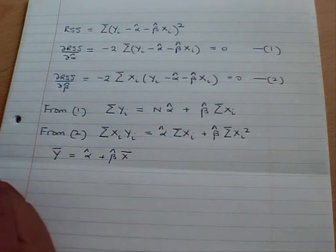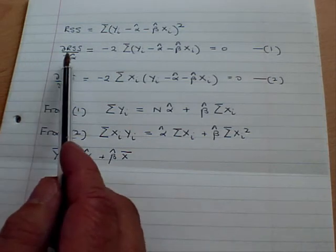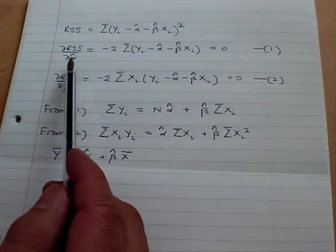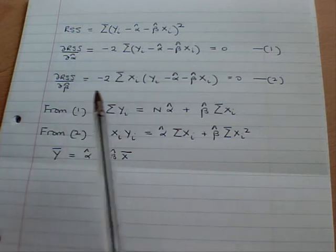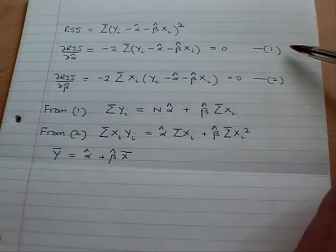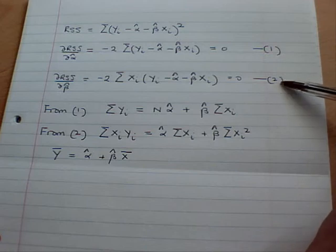This is actually a fairly simple problem in calculus. We differentiate with respect to the two unknown parameters, alpha hat and beta hat, and set the derivatives equal to zero. And these conditions are given here in equations one and two.